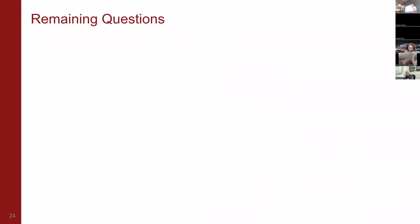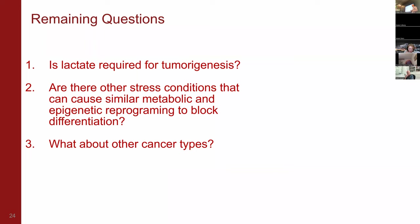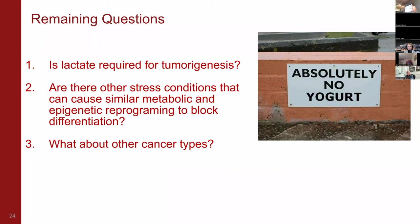That was a great start, but there are multiple questions still not addressed. First, we used hypoxia to treat cells, which still induces a lot of lactate production — so is lactate really important? And second, are there other stress conditions that can cause similar metabolic and epigenetic dysregulation to block differentiation? What about other cancer types?